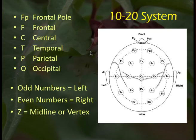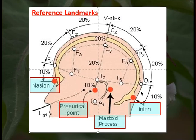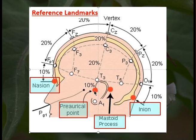The designated coordinate system uses letter-number combinations: frontal pole, frontal, central, parietal, temporal, and occipital. Even numbers are on the right, odd numbers are on the left, and Z indicates the midline or vertex. We measure from the nasion to the inion to get the total distance: 10% up from the nasion is FPZ, 20% further is FZ, and another 20% is CZ — giving us 50% of the total distance. We do the same thing from preauricular point to preauricular point, where 10% up is T3, 20% up is C3, and another 20% is CZ — so 50% of the left-to-right distance is the central midline at CZ.